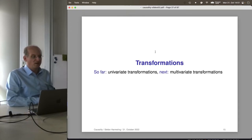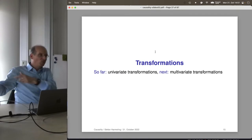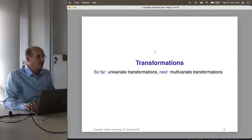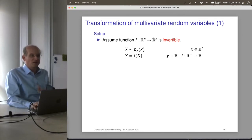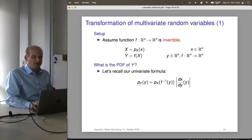Next step: transformations for the multivariate case. This is more complex, and there are some gaps I couldn't fill. In general I want to look at functions from R^n to R^n, or more generally from R^n to R^m. Let's start by writing down the transformation formula we already have — it also works for the n-to-n case, with the key requirement that the function must be invertible.